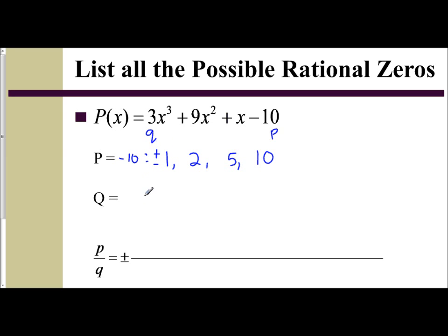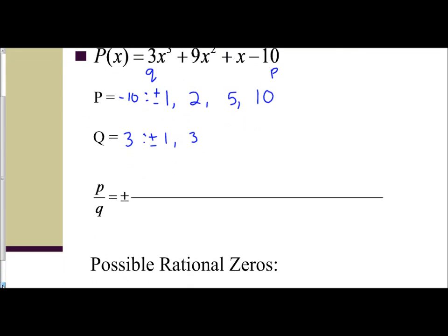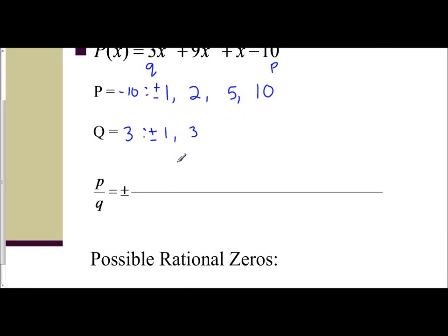Same thing goes with your Q value. Your Q value is 3. So what are the factors of 3? Well, they're 1 and 3, the positive and the negative numbers. And so when you are making your list, your P over Q, the list of possible rational zeros, what you want to do is take every single factor of your P, 1, 2, 5, and 10. And you want to divide it by every factor of Q, 1 and 3.